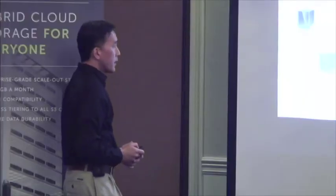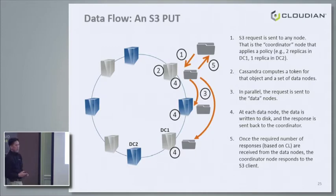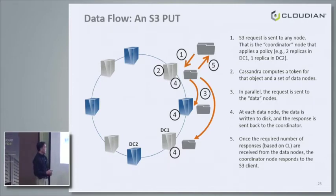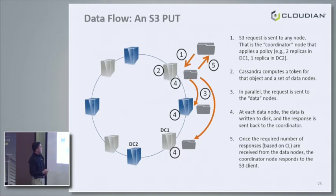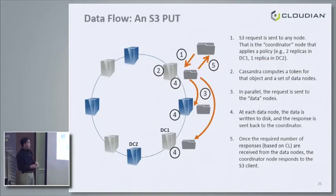Let's walk through the lifecycle of one S3 PUT — writing an object to the cluster. The request comes in from the client application — say a photo sharing site — runs through the load balancer, and gets distributed to a node. That node becomes the coordinator node for that request. We start applying policy: for this bucket it's configured to put two replicas in DC1 and one replica in DC2.